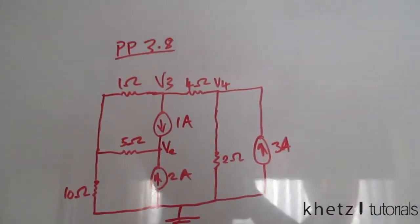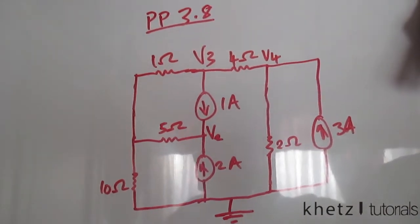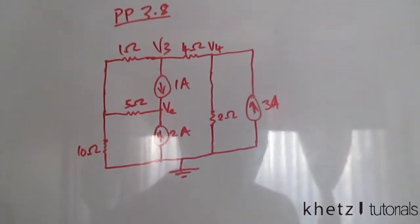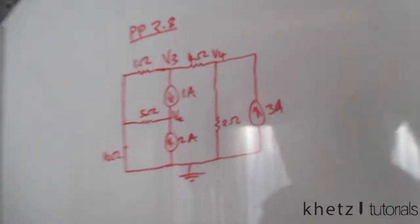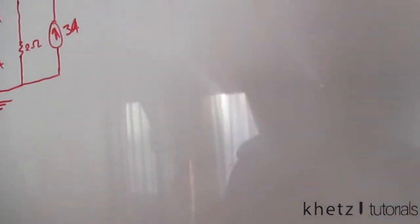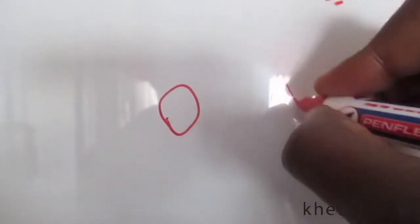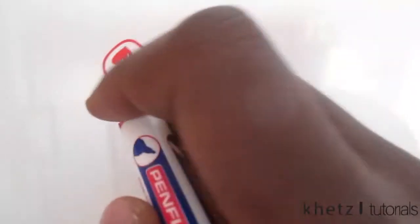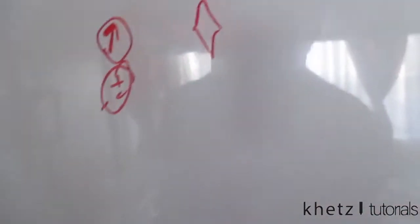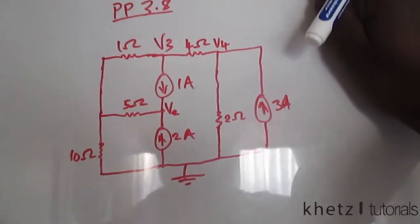Welcome to Cat's Tutorial Heroes. In this video I'll be covering practice problem 3.8 from Fundamentals of Electric Circuits, fourth edition. This problem is under section 3.6, which covers nodal and mesh analysis by inspection. This method applies when all sources in the circuit are independent sources, represented by circles rather than diamonds.